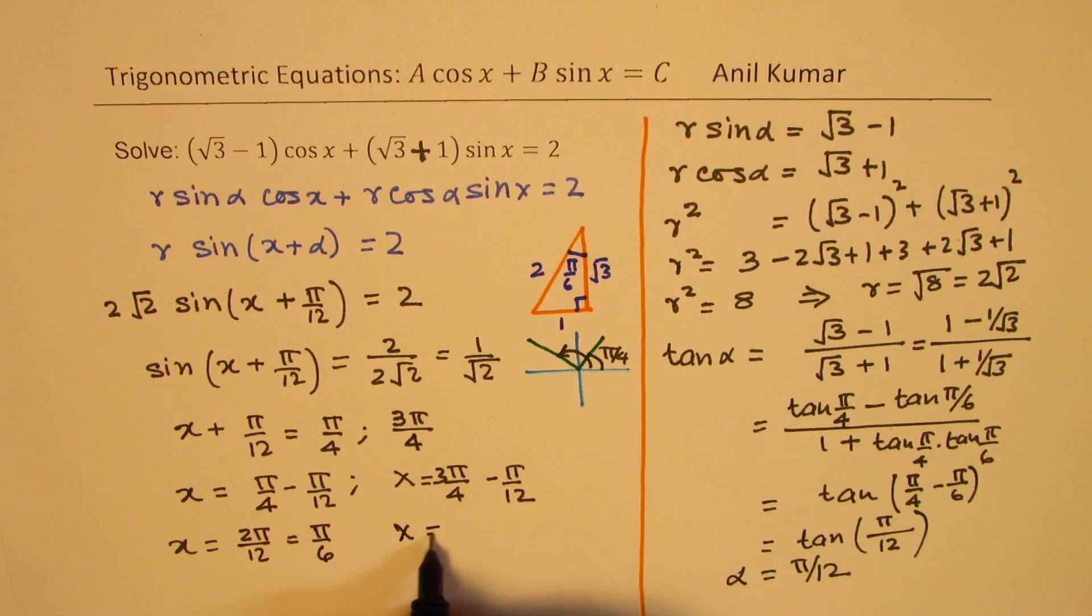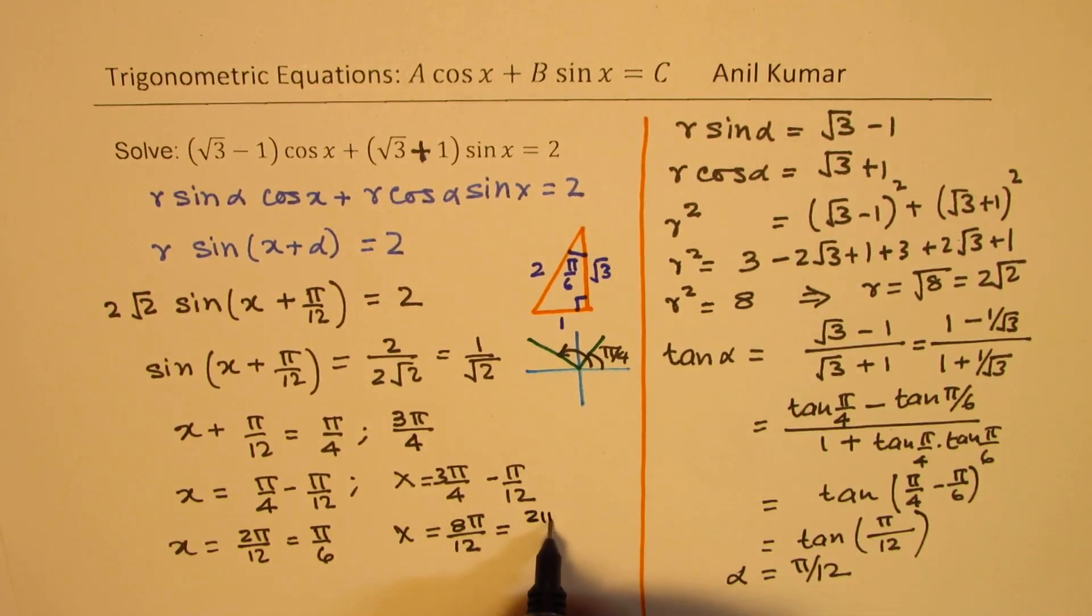In this case, we get x equals to 9 minus 1 is 8, so we get 8 pi by 12. Taking 12 as common denominator, 9 minus 1 is 8, and you can now divide by 4, so 4 times 2, so 2 pi by 3.